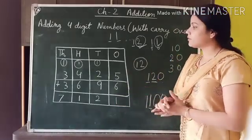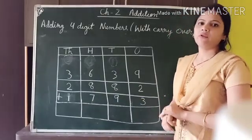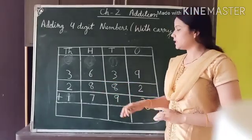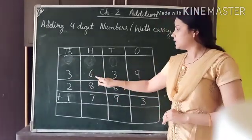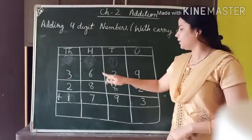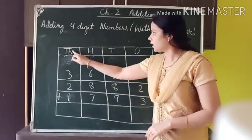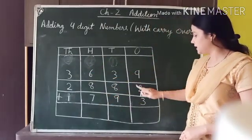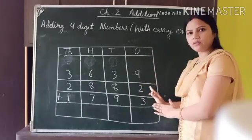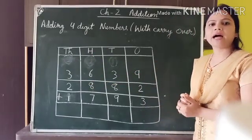You can pause this video and write this example. Now we will take another example with three different four-digit numbers. The first number is 3639, the second number is 2882, and the third number is 1793. As we already know, we first add the ones position, then tens, then hundreds, and finally thousands.